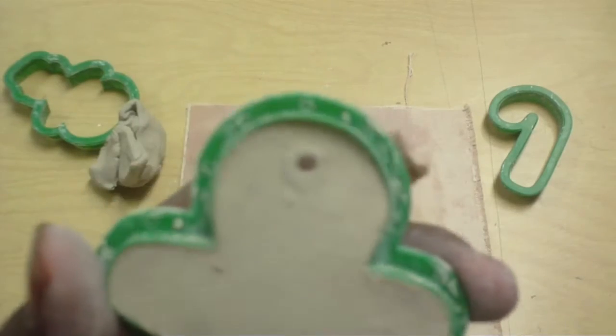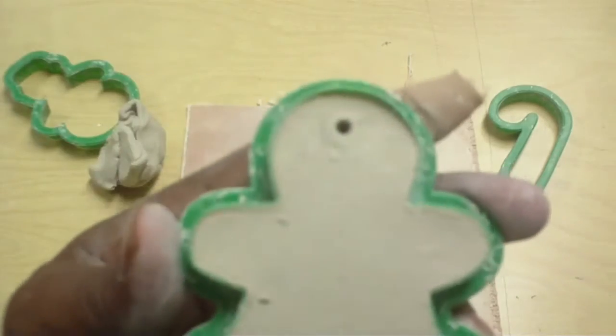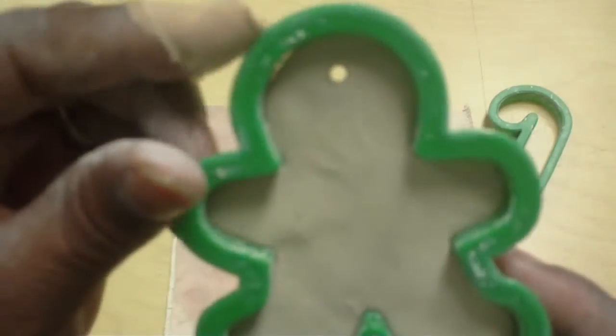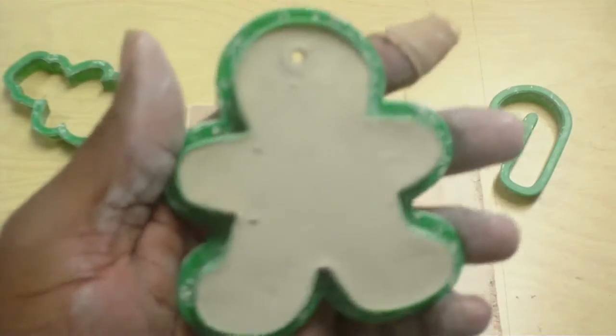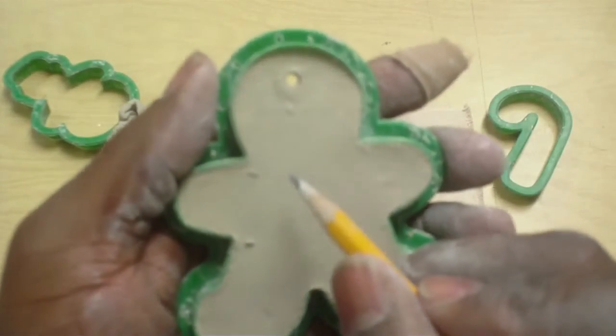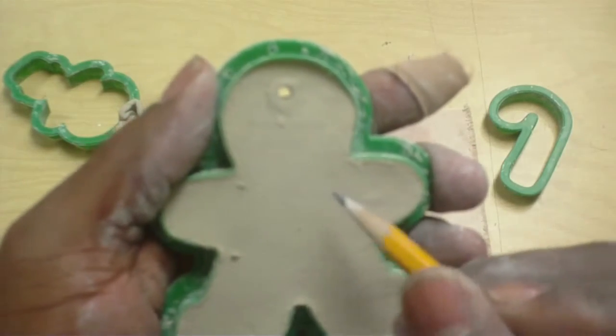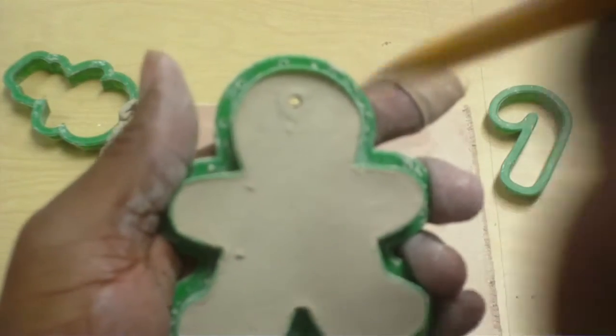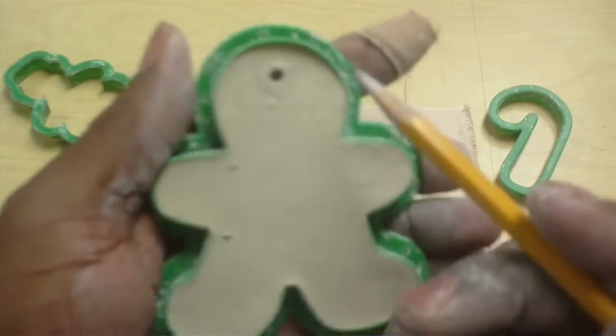So you got a nice clean hole in which to hang our ornaments. While you have it on the back, go ahead and scratch your initials. Like if you have a really short name, you can put your initials in here. Just scratch it in. Now don't go deep like you did with the hole. We just want to put it on the surface.